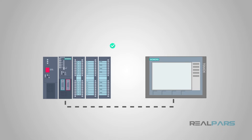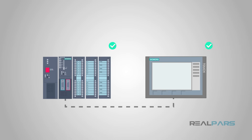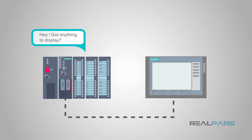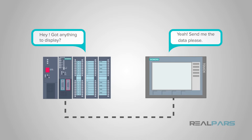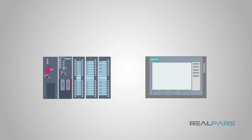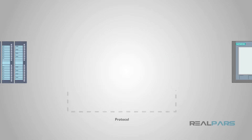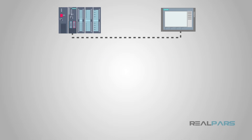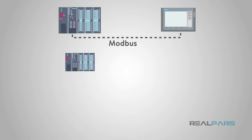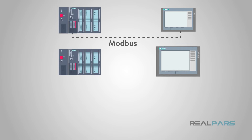This brings up another point: the HMI and PLC need to be compatible. This means they need to be able to talk to each other. They do this on what's called a protocol. Different companies use different protocols. Common protocols include Modbus, Ethernet IP, and Profibus.